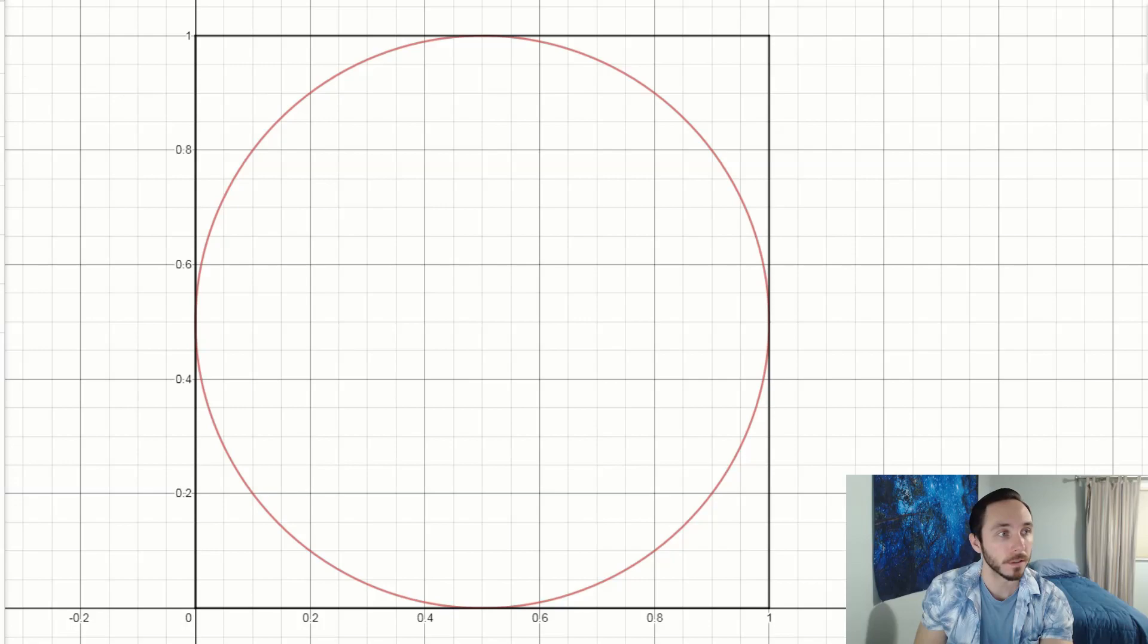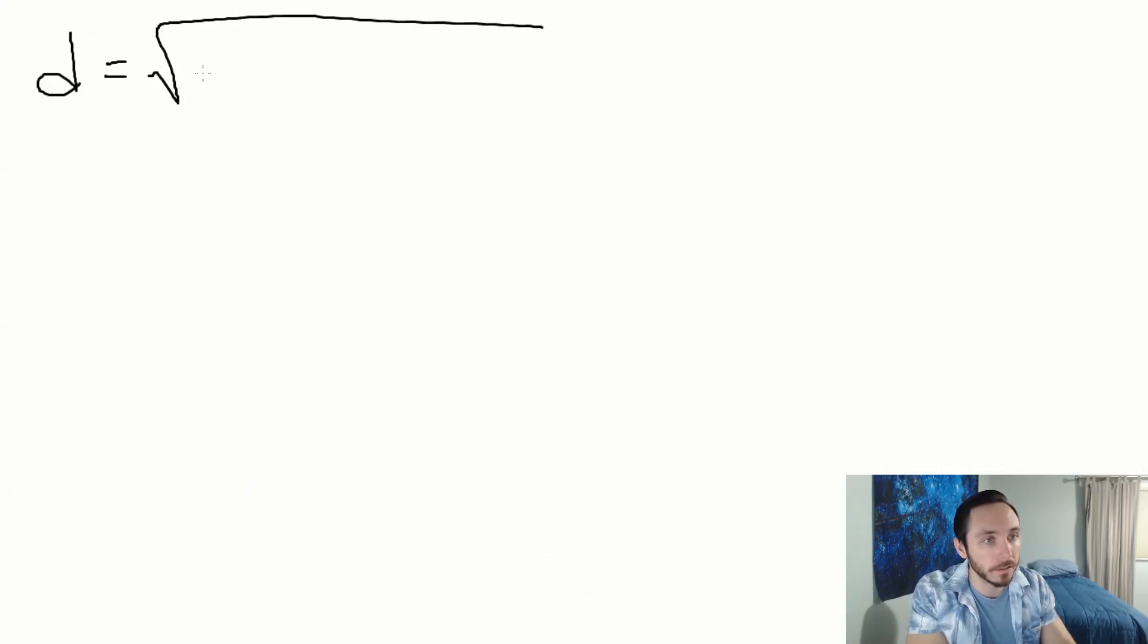What is the farthest away you can be from half comma half and still be contained within the red circle? We know the radius is a half. If we are any bit further away than half of whatever this unit is, we'll be in one of these four little slivers. We have to make sure the distance away is not any more than a half. The distance formula is x sub 2 minus x sub 1 squared plus y sub 2 minus y sub 1 squared.